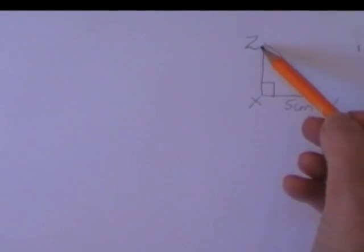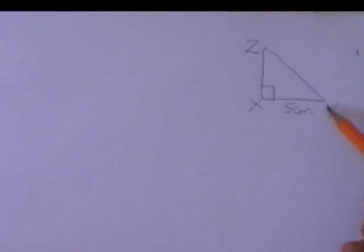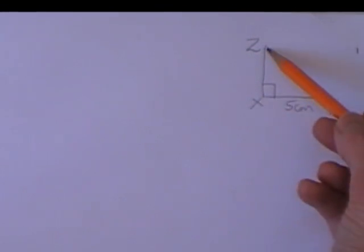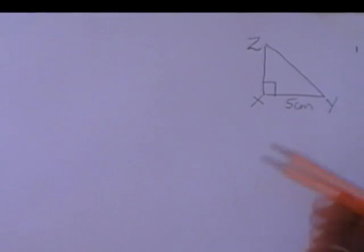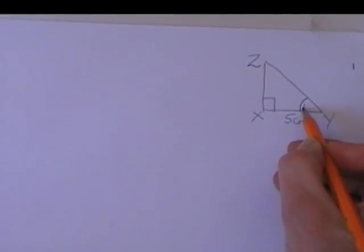So my right angle is at ZXY or we could call that angle YXZ. The other angle that I know is XYZ and it's 40 degrees.